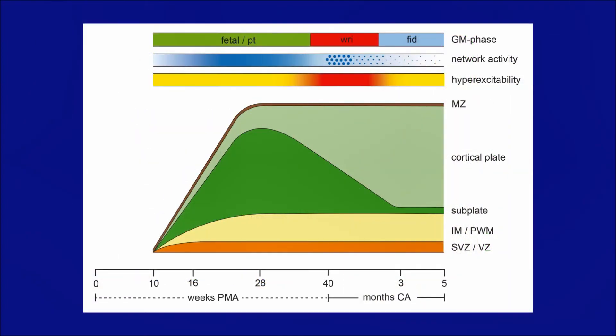Two other things happen during development. First, around term age, the nervous system is characterized by physiological hyperexcitability, also expressed by the motor neurons. This is indicated by the red phase on the third line. The hyperexcitability coincides with the phase of the so-called writhing general movements, with their somewhat forceful nature.